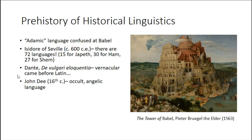John Dee is an interesting character. He believed that the Adamic language was an occult angelic language — occult in the sense of hidden or secret, from the Latin 'occultus,' related to 'conceal.' John Dee investigated, using Hebrew and other mysterious magical manuscripts, what the angelic language was. He made a number of observations about the nature of language and grammar that were systematic in the way that modern linguistics would be.